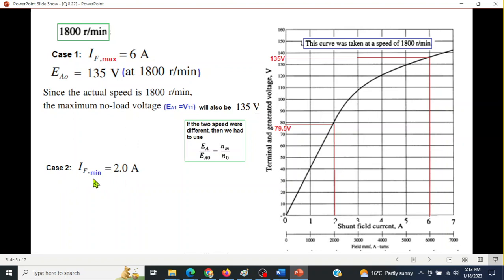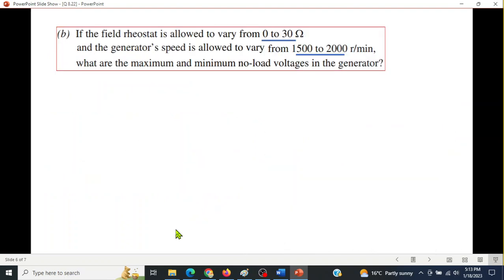Okay, now case 2, when IF minimum is 2 ampere. So for 2 ampere, we get the Ea0, 79.5. So that will be our output voltage, and this will be, of course, the minimum no load voltage, 79.5 volt. So this is part A.